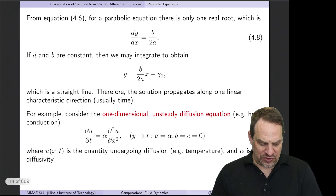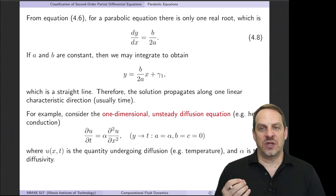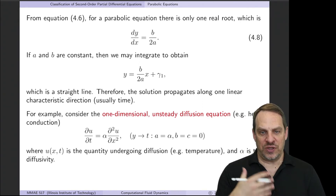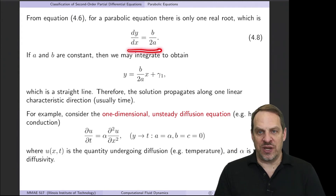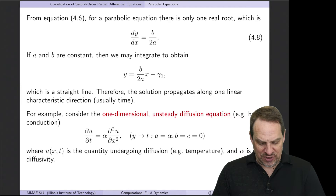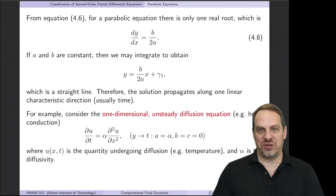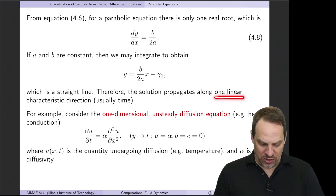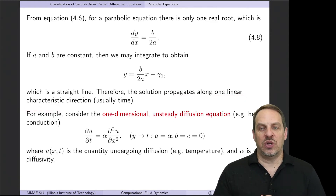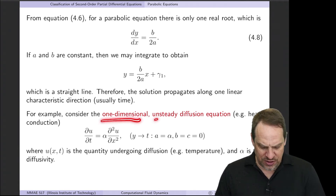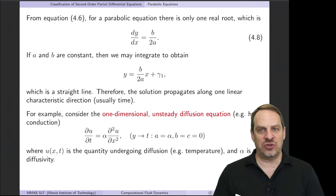Now let's look at parabolic equations. In the parabolic case, b²−4ac = 0, so we just have b/2a—only one real root and therefore one characteristic within the domain. So dy/dx = b/2a. If a and b are constants, integrating gives y = (b/2a)x + γ₁, a straight line. The solution propagates along one linear characteristic direction—normally time, but it could be a spatial dimension.